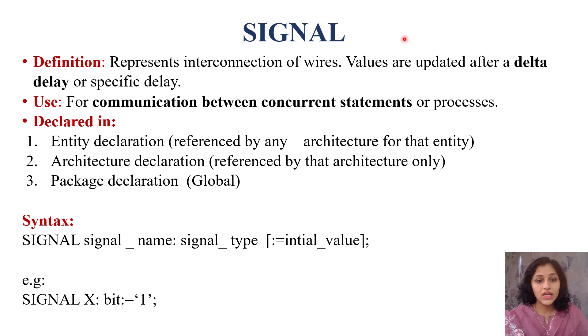Let's start with signal. Signal represents interconnection of wires. If you are familiar with structural modeling, then you know we connect first block with other block, we declare components and then we use this signal data type. Signal represents interconnection of wires and values are updated after delta delay or specific delay. They are used for communication between concurrent statements or processes.